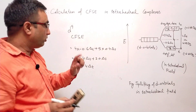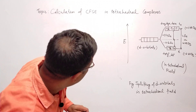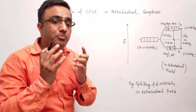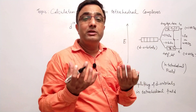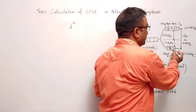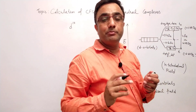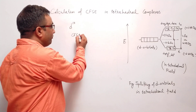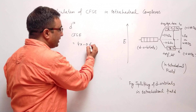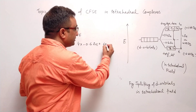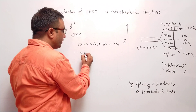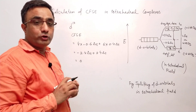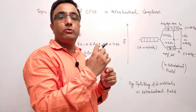You can easily calculate CFSE for D10 electronic configuration for a tetrahedral complex. The arrangement: all orbitals will be completely filled — first through tenth electron — all orbitals are completely filled, whether tetrahedral or octahedral. For D10: 4 electrons × (−0.6 delta T) and 6 electrons × (+0.4 delta T) gives −2.4 delta T + 2.4 delta T = zero. So in case of D5 and D10 tetrahedral complexes, the value of CFSE comes out to be zero.